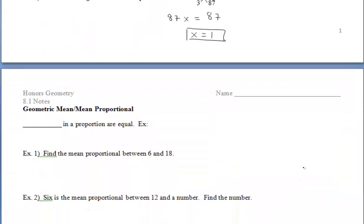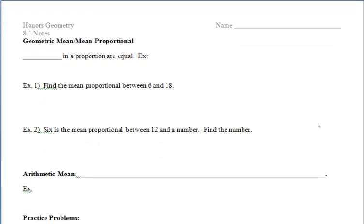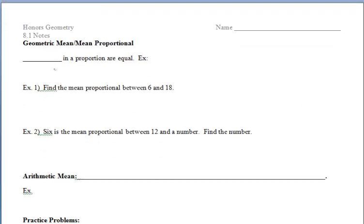Now the geometric mean and the mean proportional mean the same thing, so you can use them interchangeably. And this is when the means of a proportion are equal. So for example, if I were to give you the proportion 1 third is equal to 3 ninths, notice that our means in the proportion are both 3. And if I were to give you a general one over here, our means are both x in that general proportion.